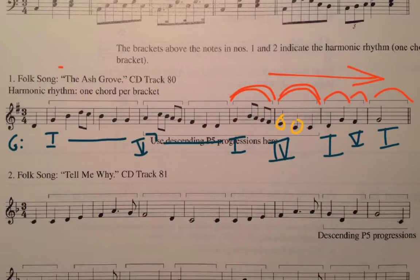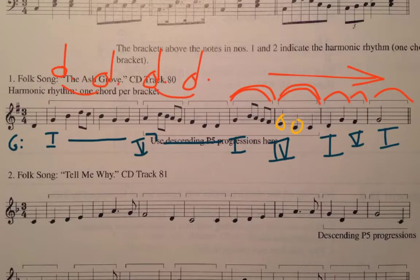So the harmonic rhythm is: in the beginning, two dotted half notes tied together for that chord, then two dotted half notes tied together for the next chord, then one dotted half note, one dotted half note, a half note, a quarter note for the dominant, and then back to a dotted half note. That is the harmonic rhythm.